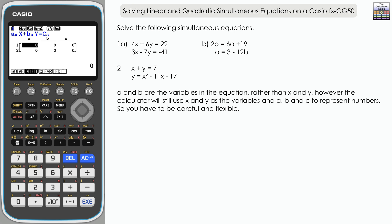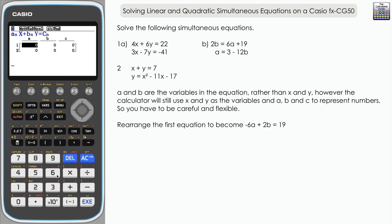The second thing to note is that the equation isn't quite in the right format yet. We need both variables on one side of the equals sign and just a number on the other side. So let's rearrange the first one: the simplest way is to subtract 6a from both sides, giving minus 6a plus 2b equals 19. First row, first column is the coefficient of a — remember x is representing a — so that's negative 6.